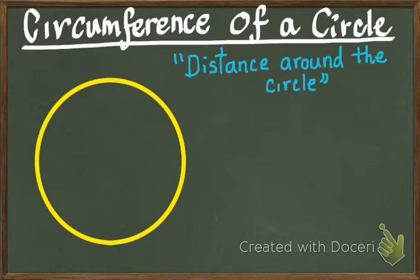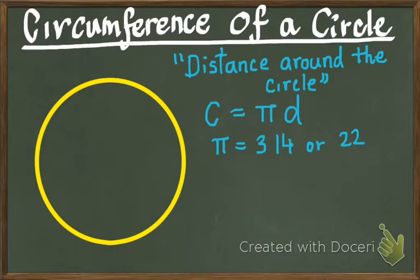To find the circumference of a circle, we use the formula c is equal to pi times d. Pi is a constant and it will take the value either 3.14 or 22 over 7. And d is the diameter of the circle.